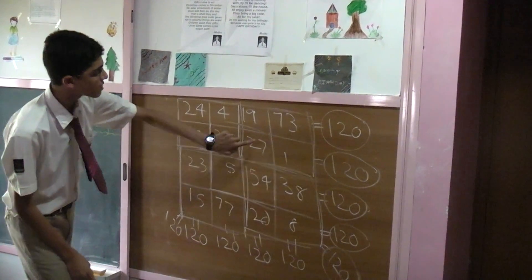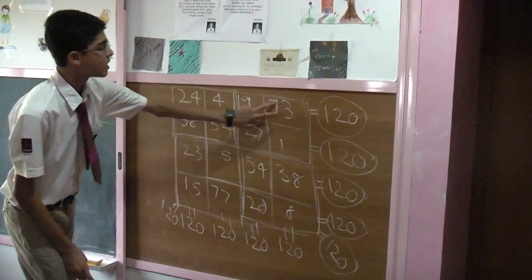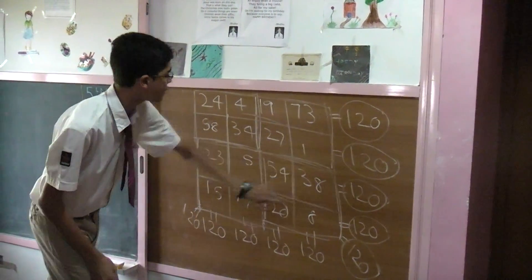You add this one plus this one plus this one, you get 120. 58 plus 23 plus 19 plus 20 is 120. 24 plus 5 plus 73 plus 8 is 120. 4 plus 77 plus 1 plus 38 is 120.